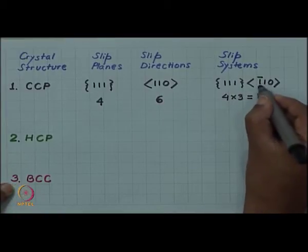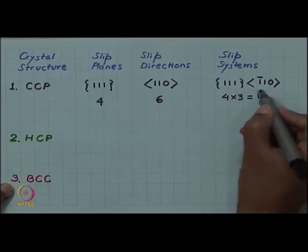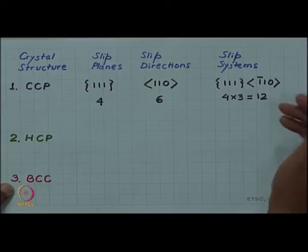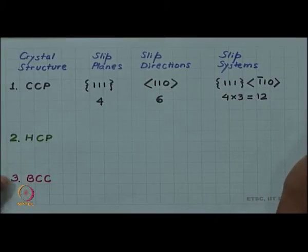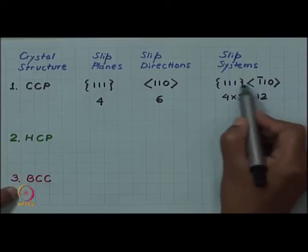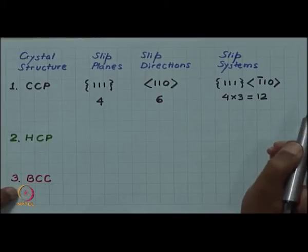But recall that [1̄10] family is same as [110] family because it also belongs to the same family and any member of the family can represent the entire family. Only here writing [1̄10] then satisfies the Weiss zone law with (111) what I have written here.